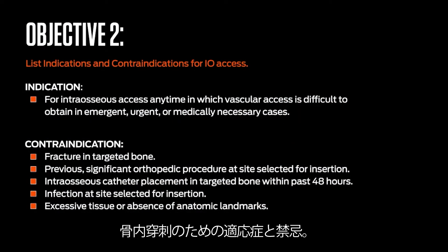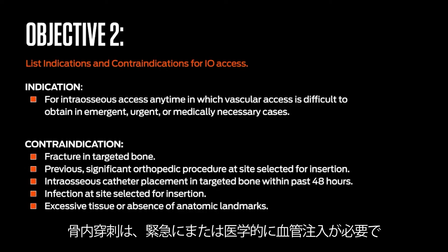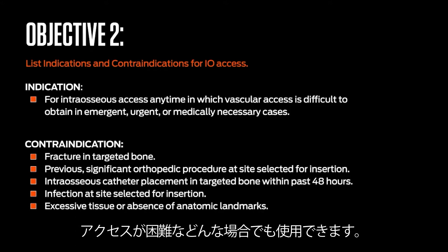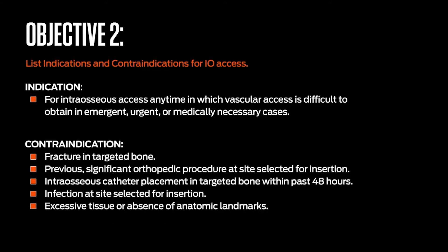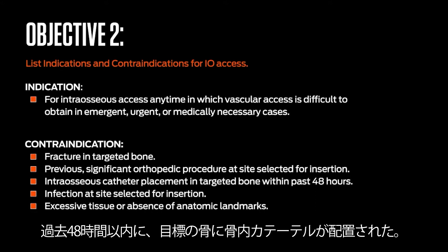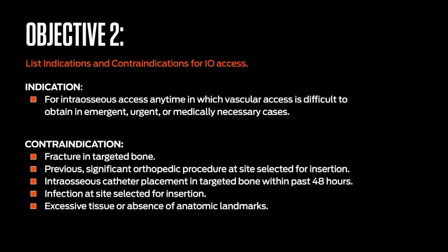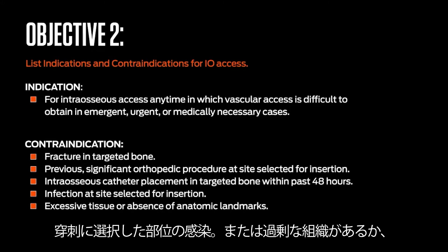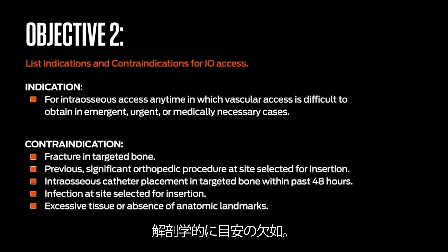IO access is indicated any time in which vascular access is difficult to obtain in emergent, urgent, or medically necessary cases. Contraindications include: fracture in the targeted bone, previous significant orthopedic procedures at the site selected for insertion, interosseous catheter placement in the targeted bone within the past 48 hours, infection at the site selected for insertion, or excessive tissue or absence of anatomic landmarks.